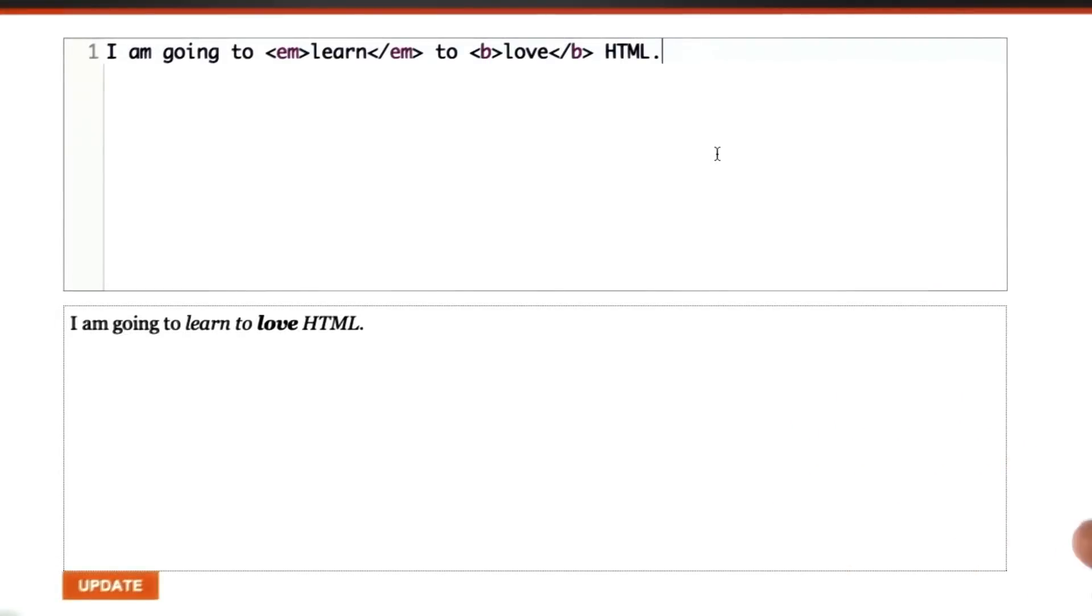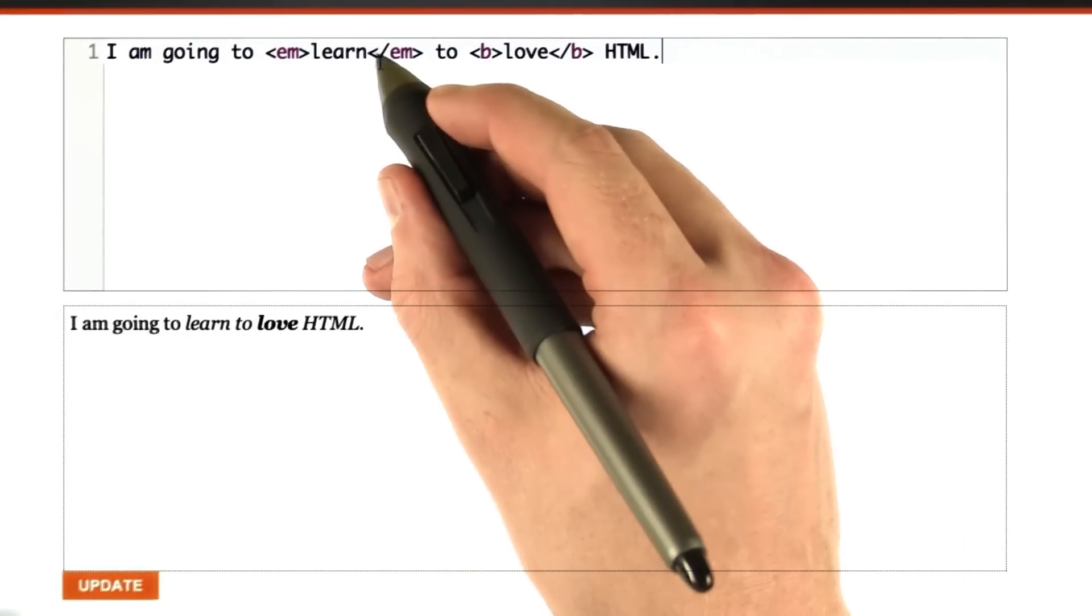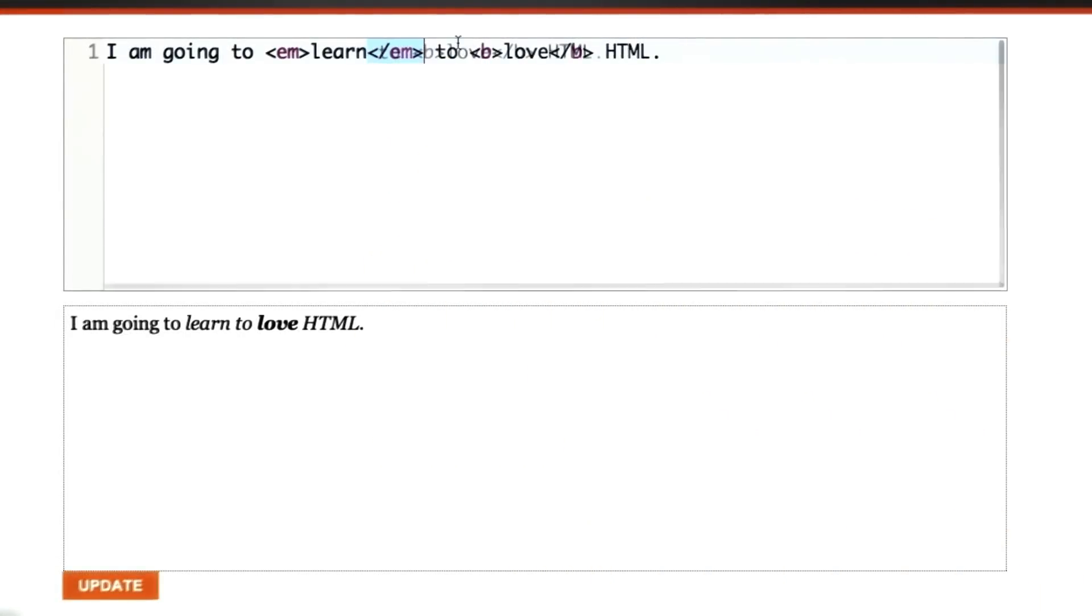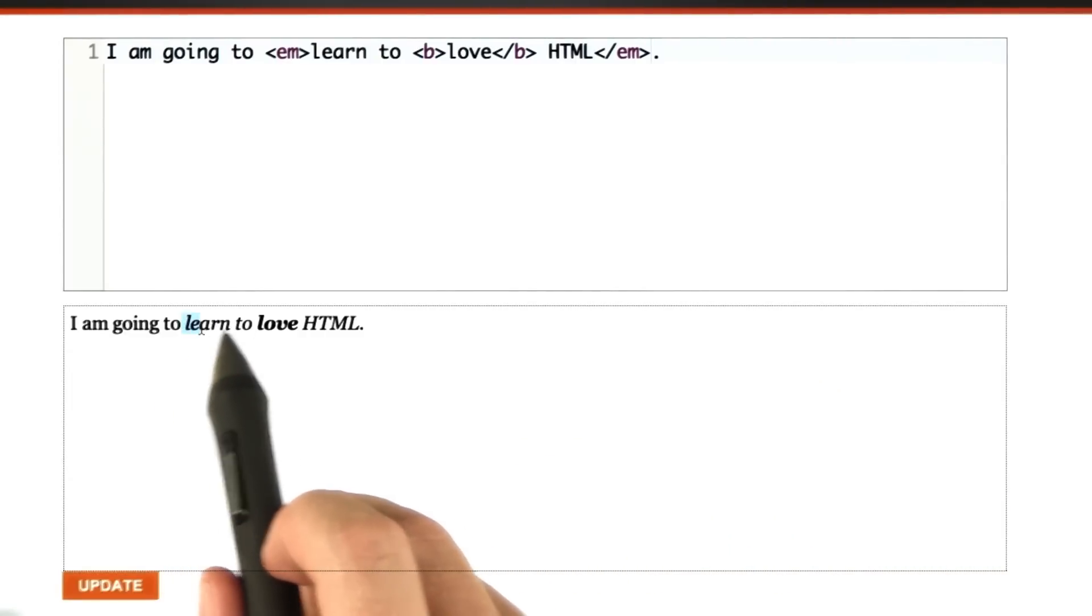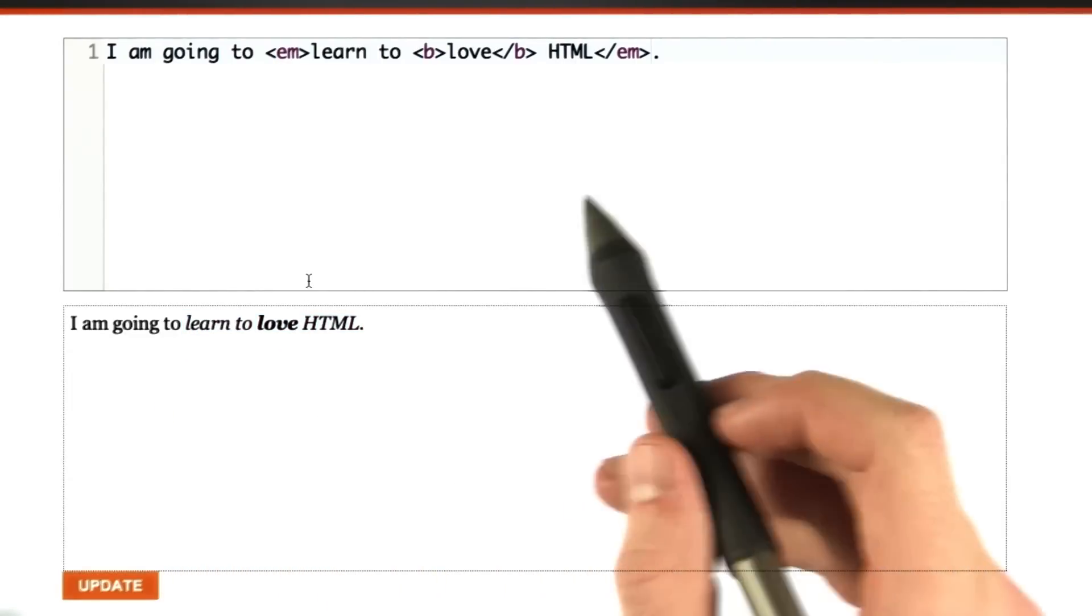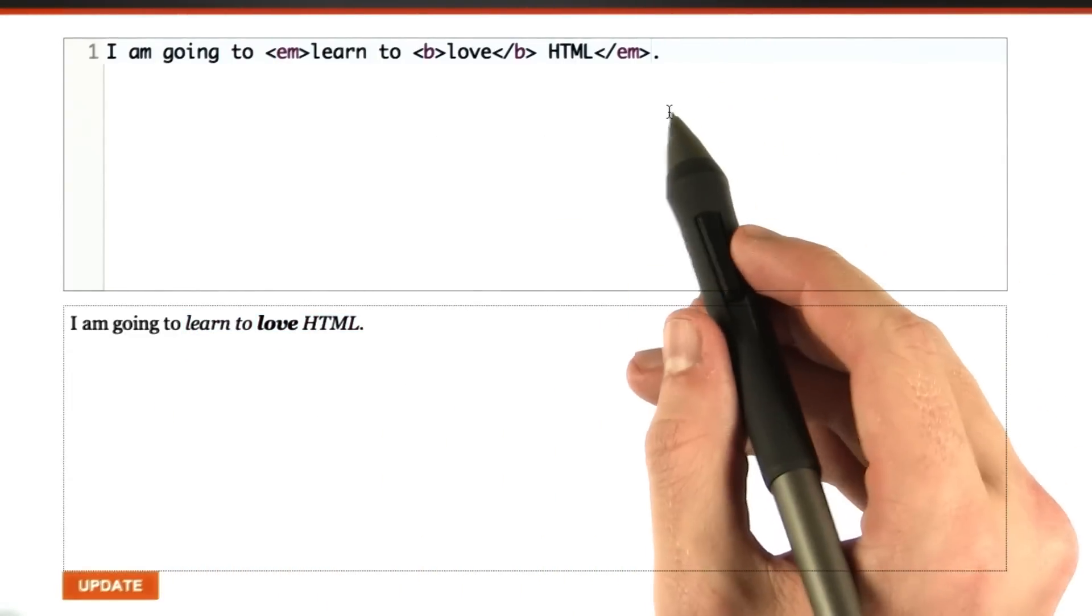Let's experiment with that in the editor. So I'm going to take the closing m tag off here and put it on the back. And if we update this, we can see that the whole phrase learn to love HTML is in italics, and that's what we just saw in the quiz.